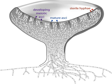Perithecium: these are flask-shaped structures opening by a pore or ostiole, a short papilla opening by a circular pore, through which the Ascospores escape. The ostiolar canal may be lined by hair-like structures called periphyses. The unitunicate ASCI are usually cylindrical in shape, borne on a stipe (stock), released from a pore, and developed from the inner wall of the perithecium, arising from a basal plectenchyma. Examples are members of Sphaeriales and Hypocreales. Perithecia are also found in Xylaria (Dead Man's Fingers, Candle Snuff), Nectria, Claviceps, and Neurospora.